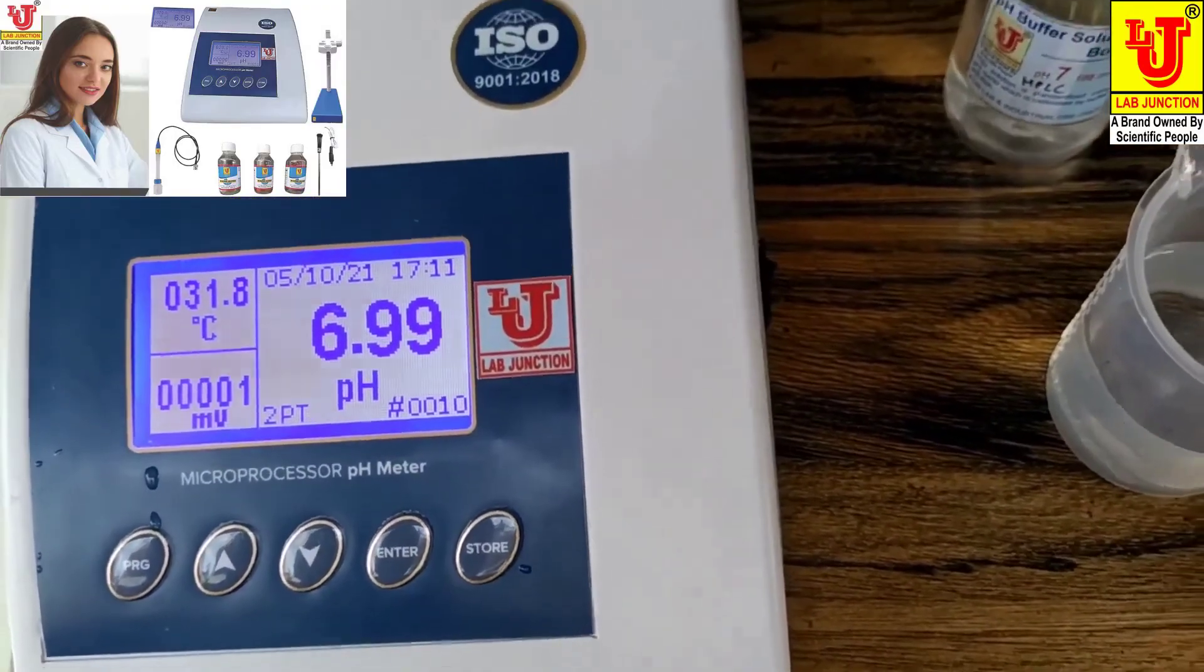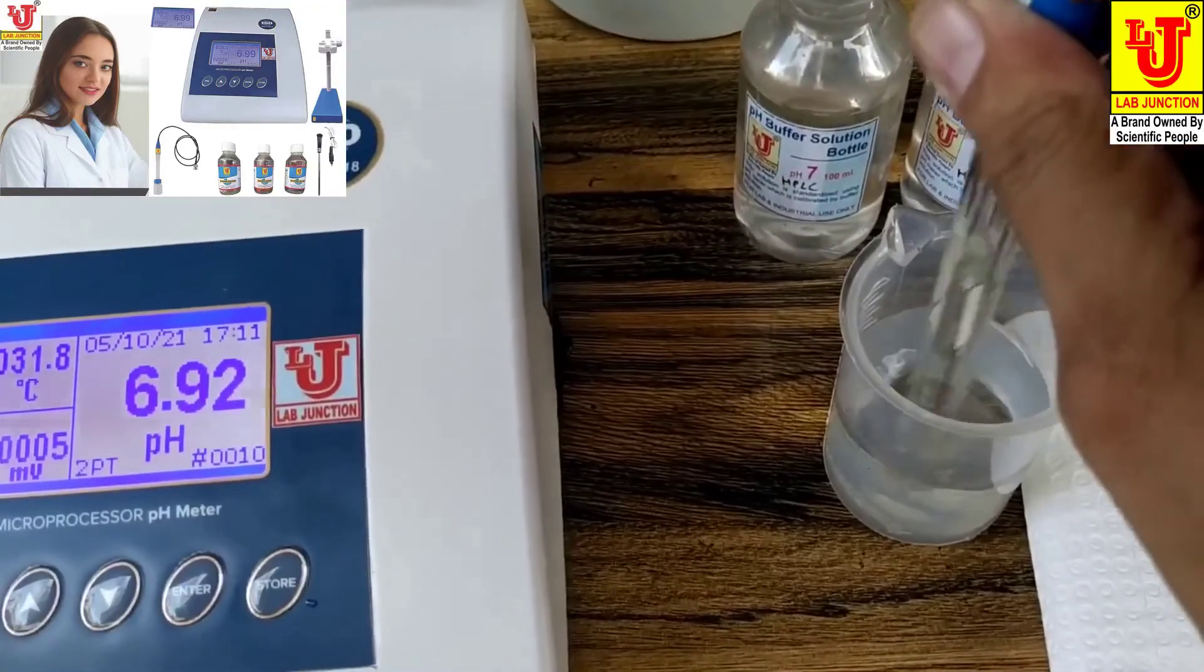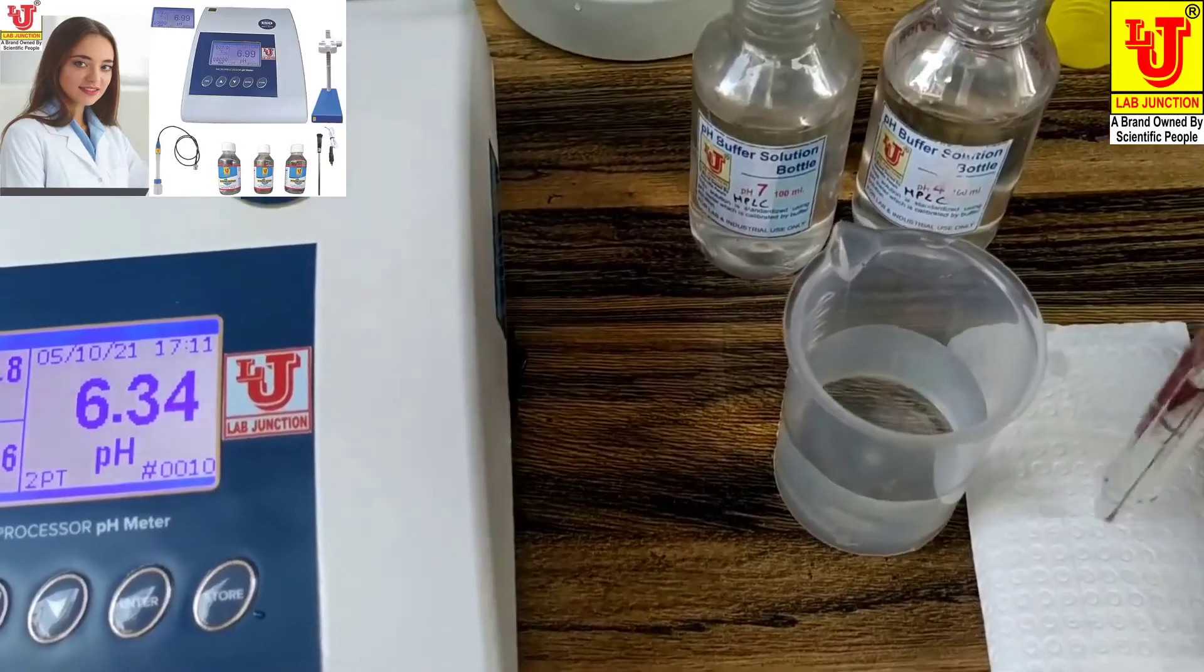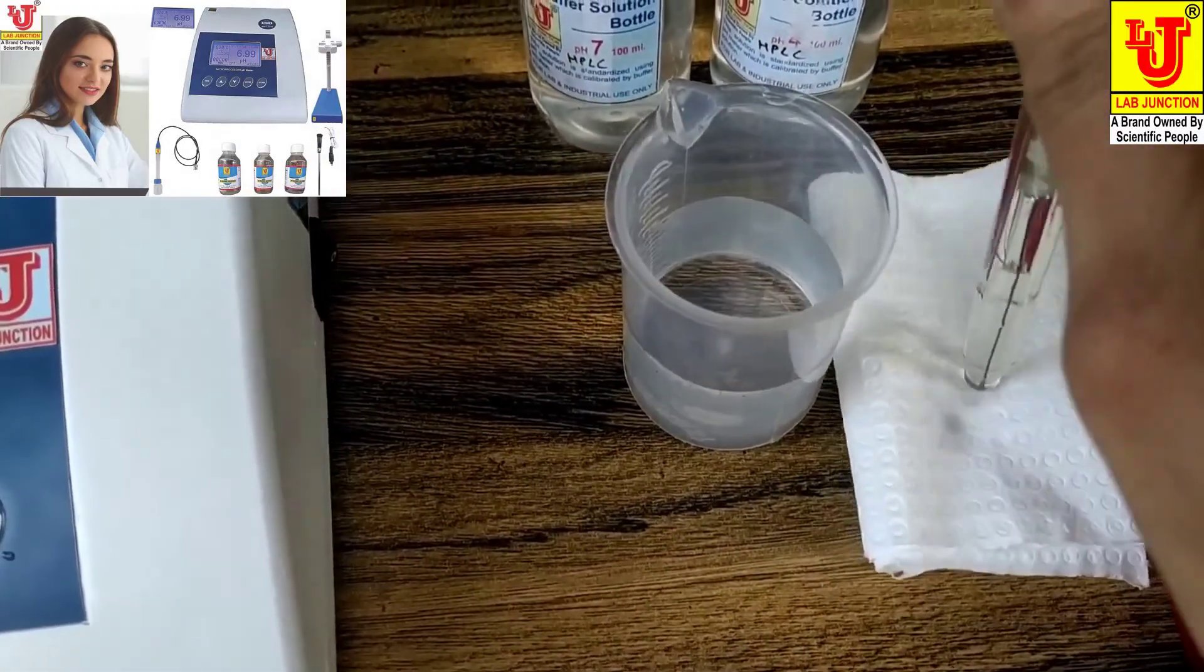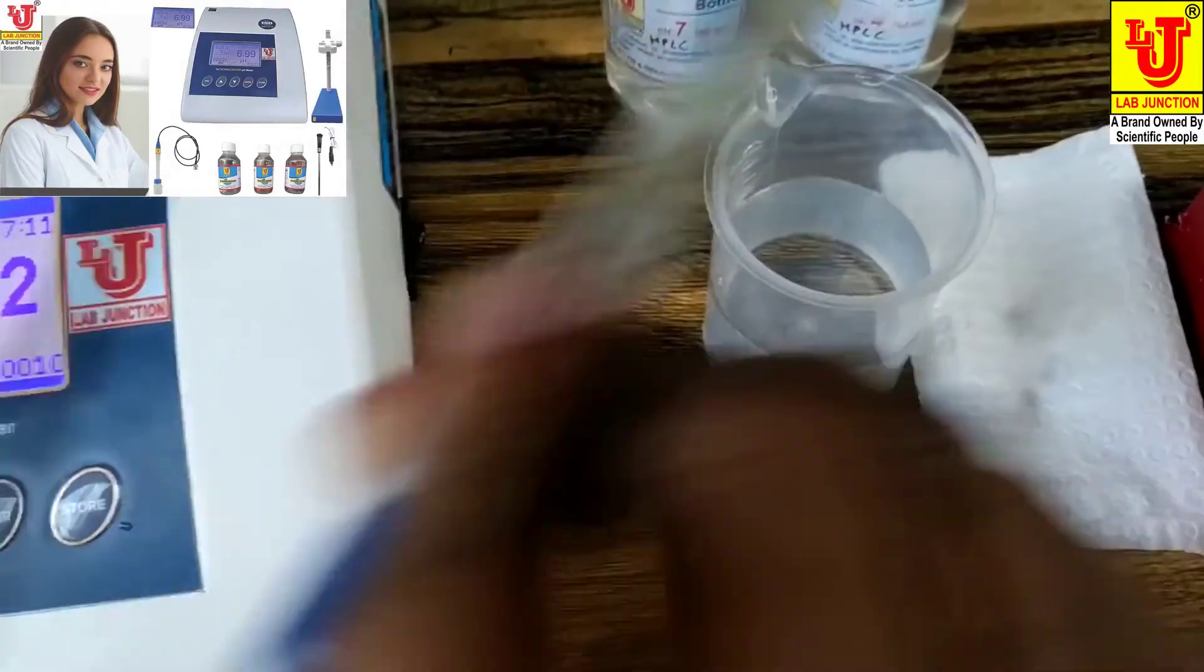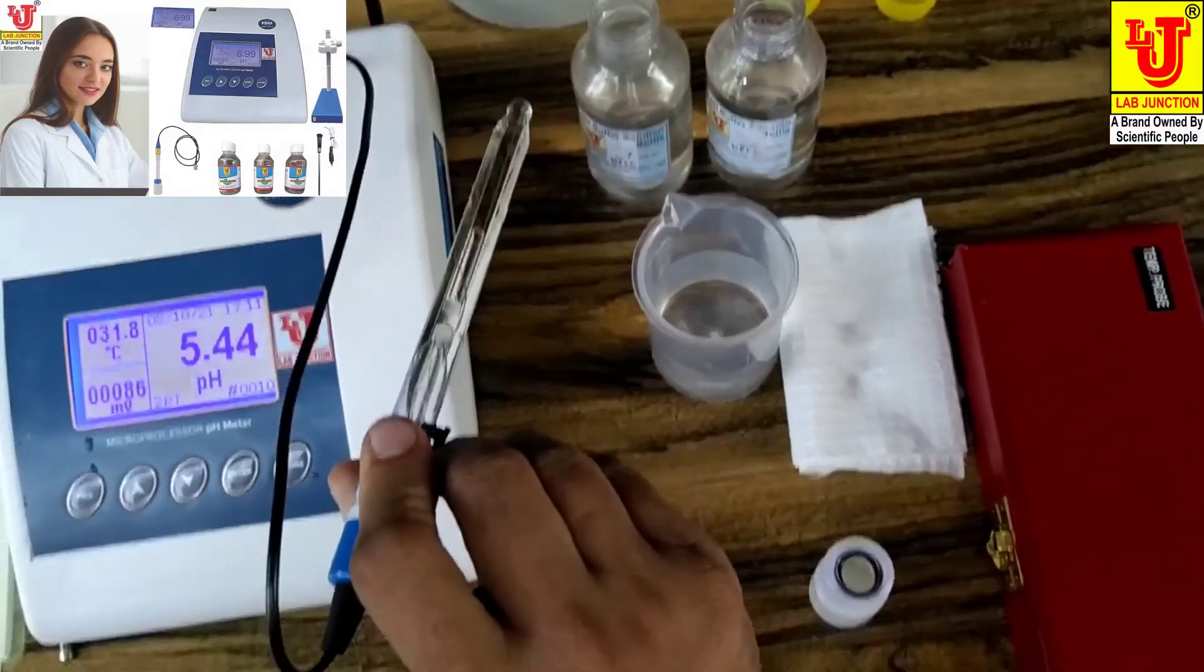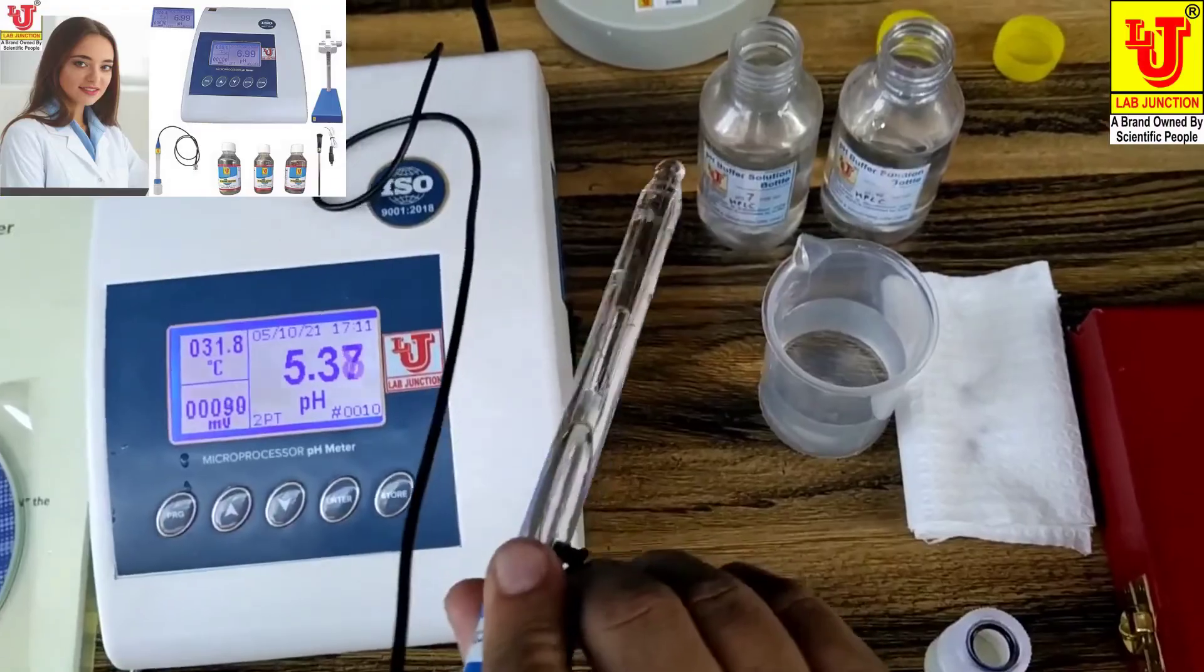When you're analyzing your sample, wash your pH electrode and refresh with tissue paper like this. No need to refresh when you dip in 7 pH or 4 pH, because buffers never contaminate.